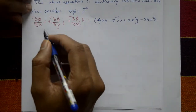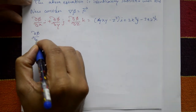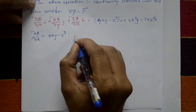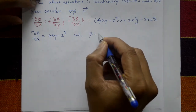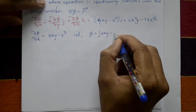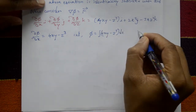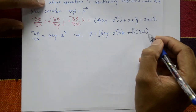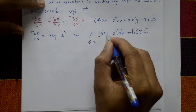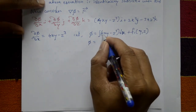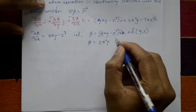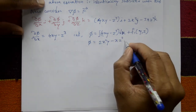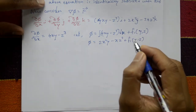Taking the coefficient of i on both sides: del phi/dx equals 4xy minus z cubed. Integrating with respect to x: phi equals 2x squared y minus xz cubed plus f1(y, z), where f1 is an arbitrary function. This is equation number 1.